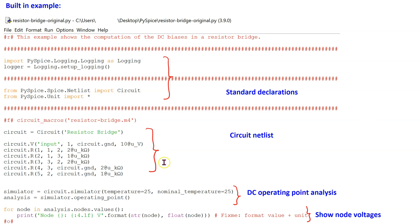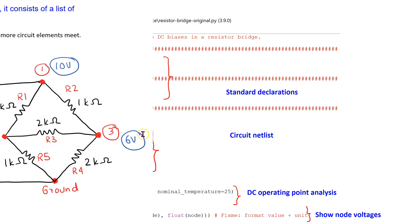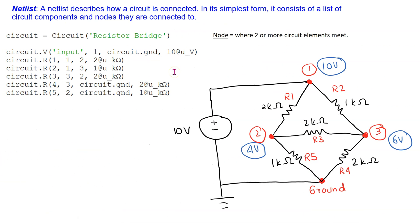The key part of the code that we need to be able to understand is the circuit netlist. In circuit simulation, a netlist describes how a circuit is connected. In its simplest form, a netlist consists of a list of circuit components and nodes that they are connected to.